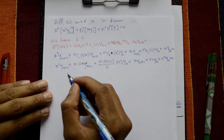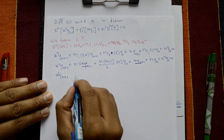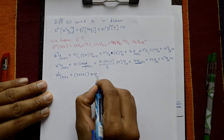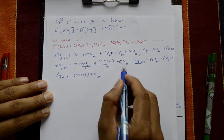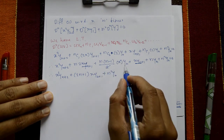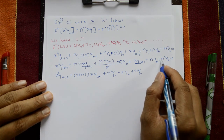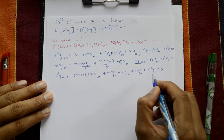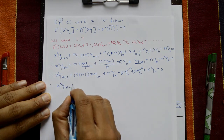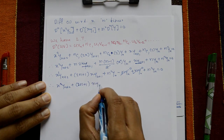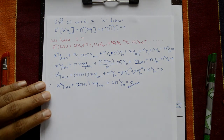Collecting x yₙ₊₁ terms: (2n + 1) x yₙ₊₁. Collecting yₙ terms: n(n−1) yₙ + n yₙ + n² yₙ = n² yₙ + 2n² yₙ... simplifying gives 2n² yₙ. Final result: x² yₙ₊₂ + (2n+1) x yₙ₊₁ + 2n² yₙ = 0. This is the required solution.